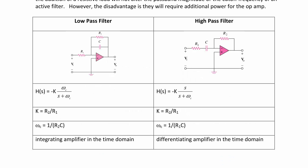The first two types of active filters are the low-pass and the high-pass filter. Here we have two example circuits that are frequency domain inverting amplifiers. Because there is a feedback capacitor on the left circuit, it becomes a low-pass filter. The transfer function is negative k·ωc over (s + ωc), where k equals R2 over R1 and the cutoff frequency is 1 over R2·C. Note that in the time domain, the low-pass filter behaves as an integrating amplifier.